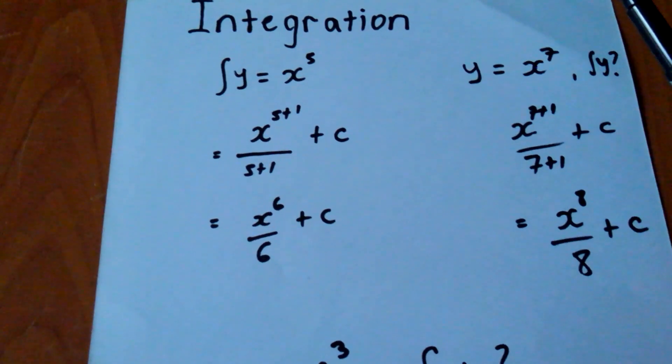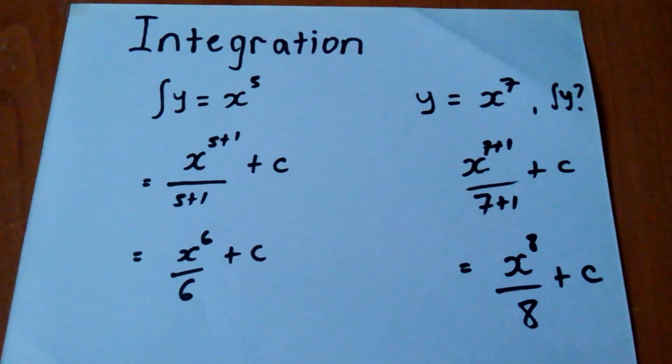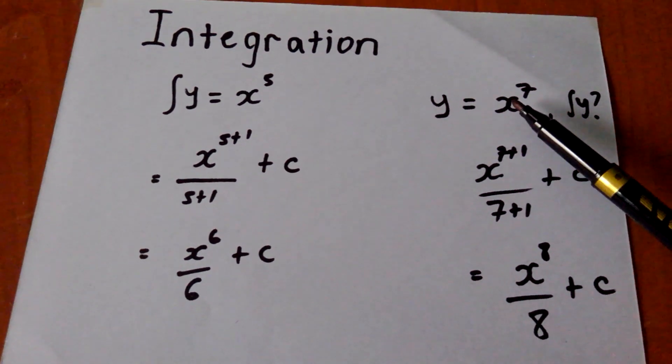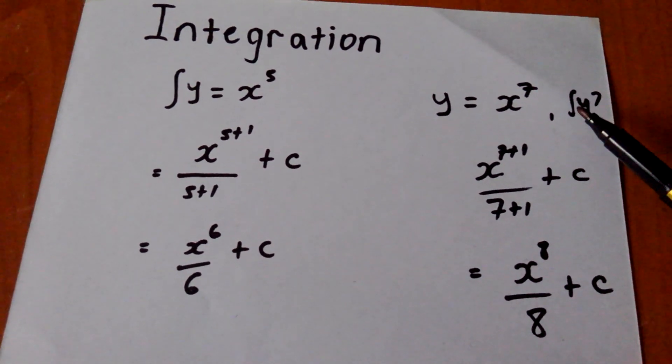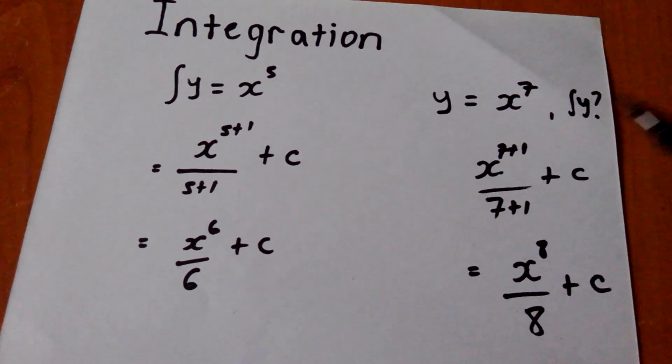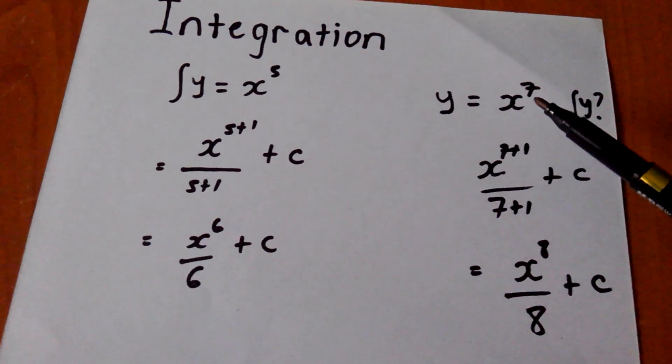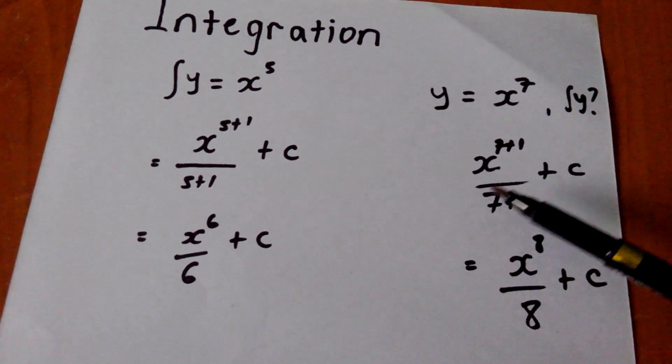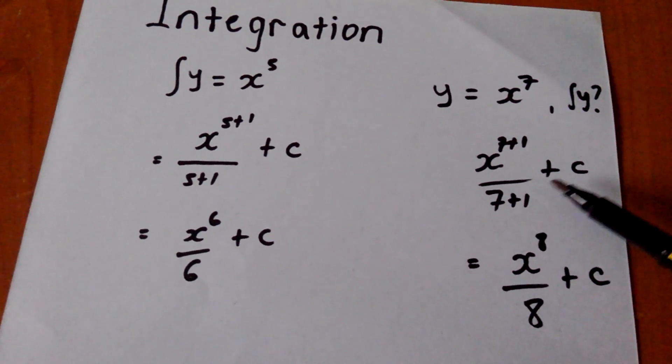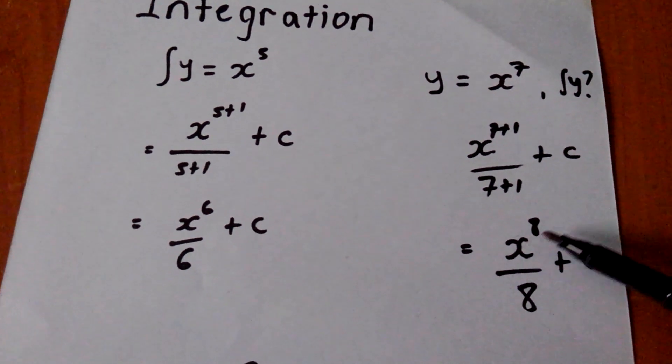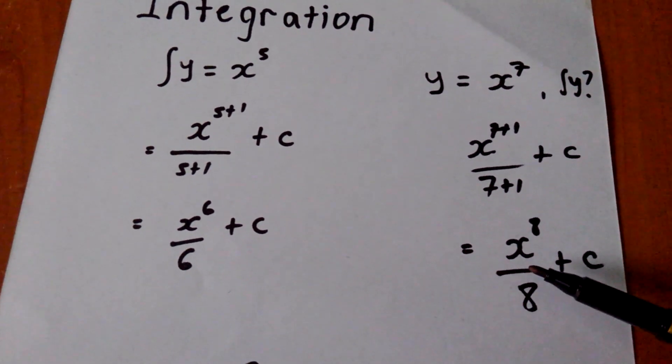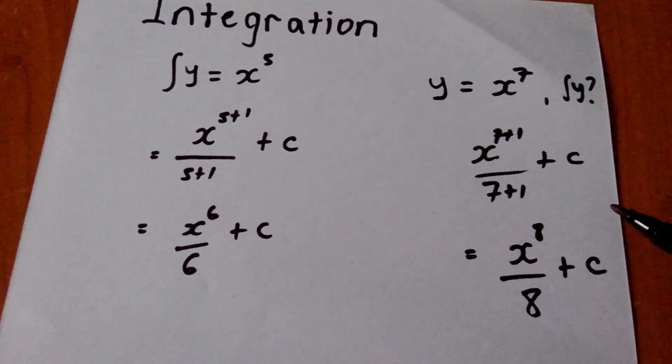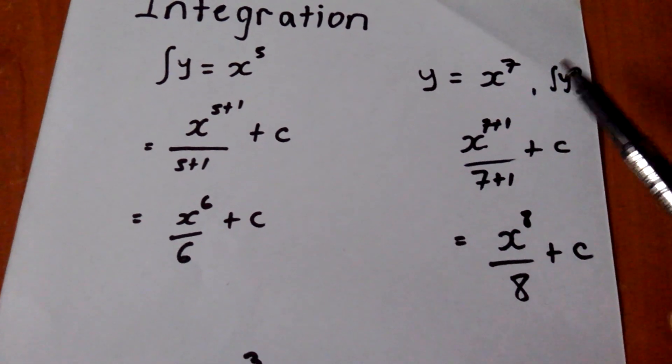Let me go to another example which you will be able to analyze and get very well. If I am given y equals x to the power 7, and they need me to integrate that y, all I am going to do: x to power 7 plus 1, I have started integrating, over 7 plus 1, which is the new power, plus c. So my answer will be x to the power 8 over 8 plus c. That is integration. I have integrated that number, the y.